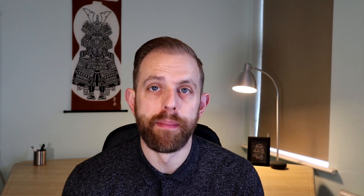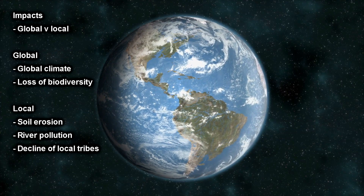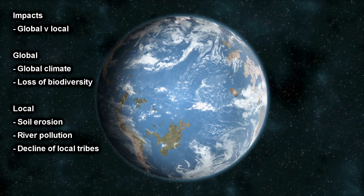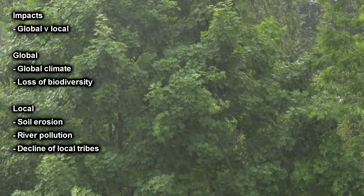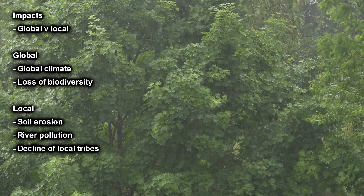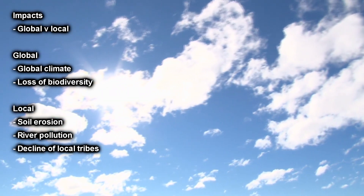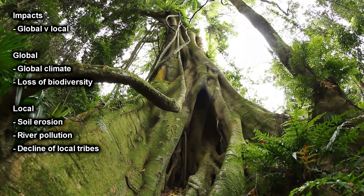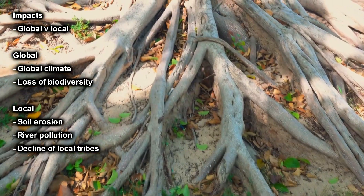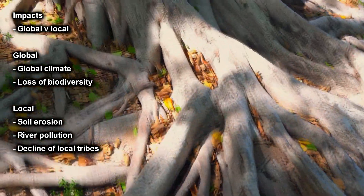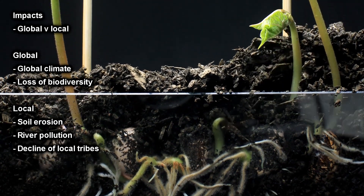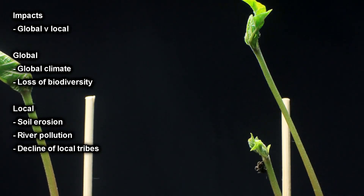When looking at the impacts of deforestation we can break it down into global and local impacts. Global impacts include affecting the global climate and the massive loss of biodiversity. Reducing the number of trees in tropical rainforests has a huge effect on climate change, as there are far fewer trees to convert carbon dioxide into oxygen. When trees are cleared, soil erosion occurs because there are no strong roots to hold the soil together — during extreme rain, nutrients and the topsoil are washed away.